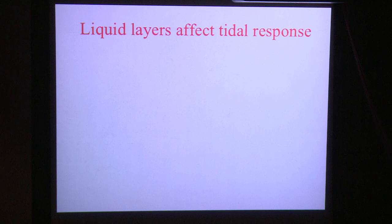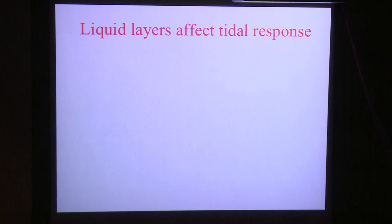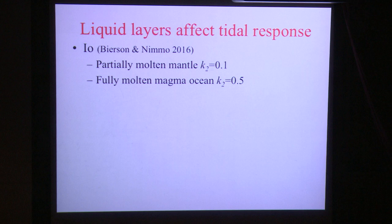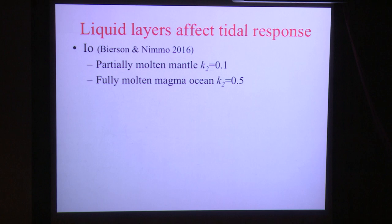Love numbers are very sensitive to the presence of liquid. For example, if you want Europa Clipper to confirm the presence of an ocean, one way is to measure the love number. A liquid layer near the surface decouples the near surface from the interior, allowing it to deform much more. The same argument applies to Io: if Io is at least partly solid throughout, it won't deform very much, but a fully liquid magma ocean near the surface would push K2 from about 0.1 up to about 0.5. So measuring the love number is very good for detecting near-surface liquid layers.